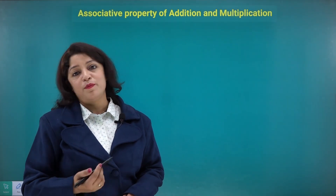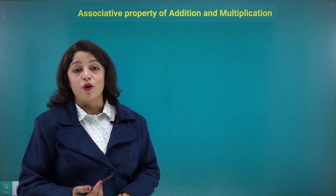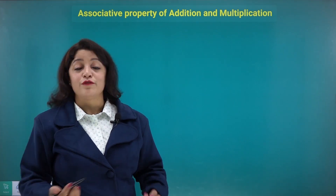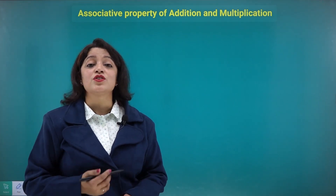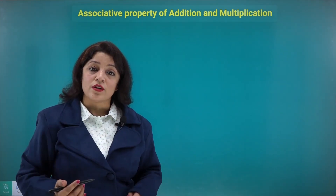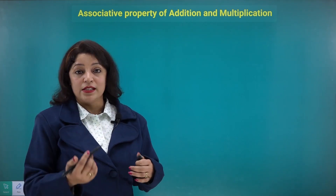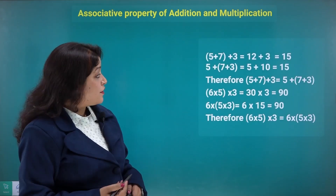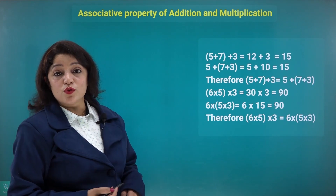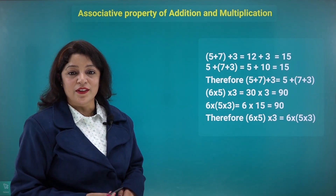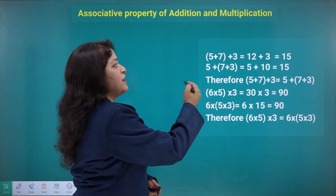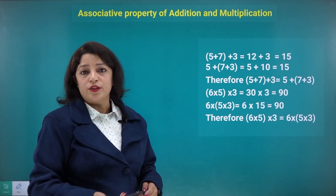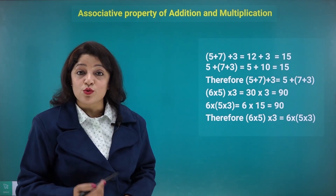The next property is the associative property for addition and multiplication. Going by the literal meaning, 'association' basically means making a group. Let's see various examples. Associative property means if I want to add three numbers — 5, 7, and 3 — there can be different ways to solve it.